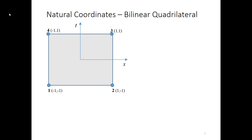Before we get into how we map from a local coordinate system to a global one, let's focus on that local coordinate system. For isoparametric elements, instead of talking about a local coordinate system, we call it the natural coordinates for an element. What I've shown here is the bilinear quadrilateral element in its natural coordinate system — I'll call that coordinate system S and T. The axes are centered in the middle of the element, the element has a fixed size of two units tall and two units wide, and the node numbering is as shown.